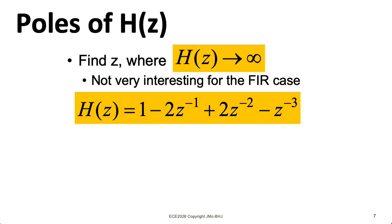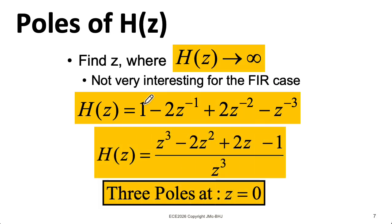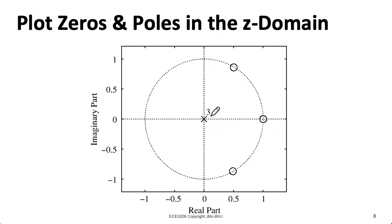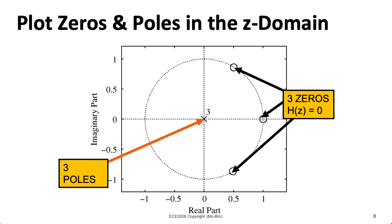Now the poles of FIR filters are not that interesting. I can imagine taking this and dividing it by 1, and then multiplying the numerator and the denominator by z cubed. And we'll say that there's three poles at 0. So when we plot this, we'll put a little 3 next to the x here to indicate there are three poles. And we'll do the same thing for zeros if there's multiple zeros at the same location. Here the three zeros are going to have an important effect on the frequency response. But the three poles at the origin are not that important.